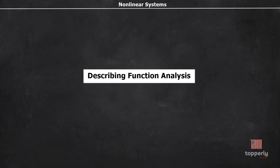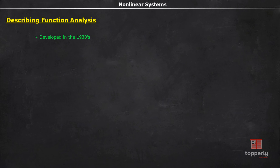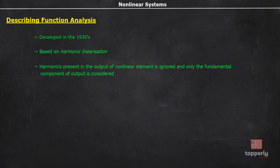Describing function analysis was developed in the 1930s. It is an attempt to apply the familiar frequency domain techniques that work well for linear systems to nonlinear systems. Describing function analysis is based on harmonic linearization. The principle involved is: under sinusoidal excitation, the harmonics present in the output of the nonlinear element are ignored, and only the fundamental component of the output is compared with the input sinusoid. This allows us to replace the nonlinear element with an input-dependent complex gain with a magnitude and phase shift.